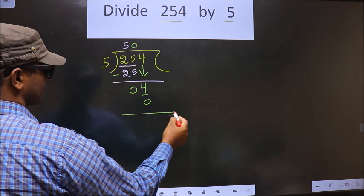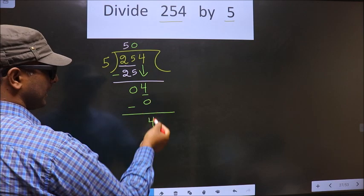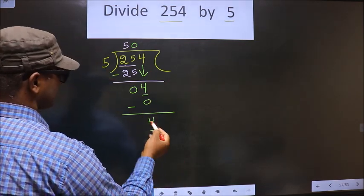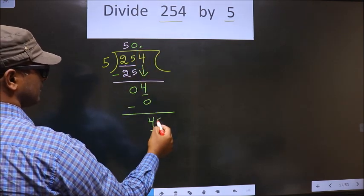Now you subtract, you get 4. Here we did not bring any number down. Now 4 is smaller than 5, so now you should put a decimal and take 0.